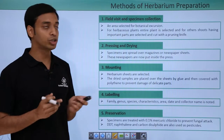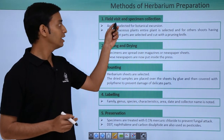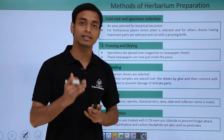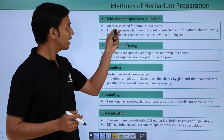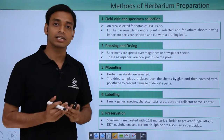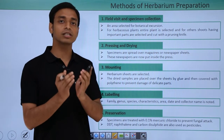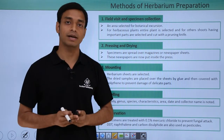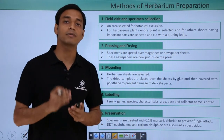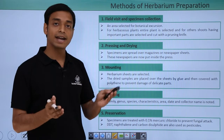Now let us look at how to prepare a herbarium sheet. The first step is field visit and specimen collection. An area is selected for botanical excursion and specimens are collected. For herbaceous plants, the whole plant sample is taken. For bigger plants, shoots with important parts like flowers and fruits are selected and cut with a pruning knife.